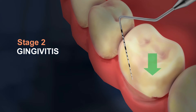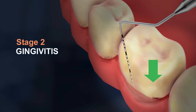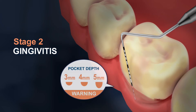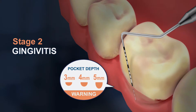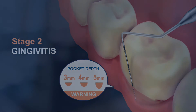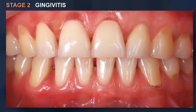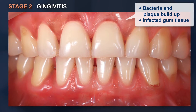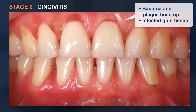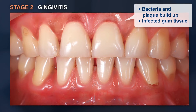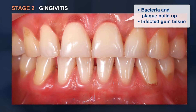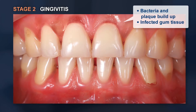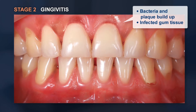Stage 2 is the early onset of gum disease, known as gingivitis, and is indicated by pocket depths of 3 to 4 millimeters. Gingivitis is caused when bacteria start to multiply within the plaque and build up on the surface of the teeth, causing red and slightly inflamed infected gum tissue.